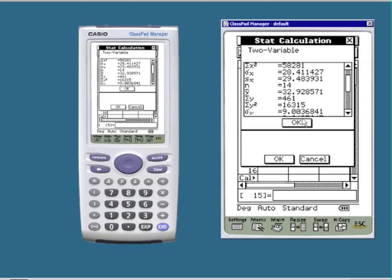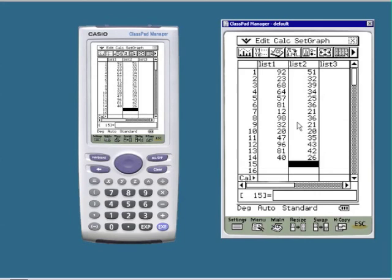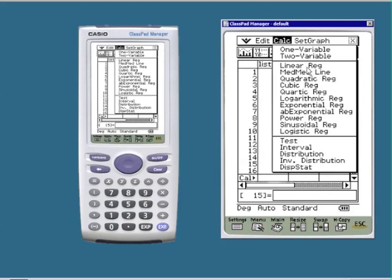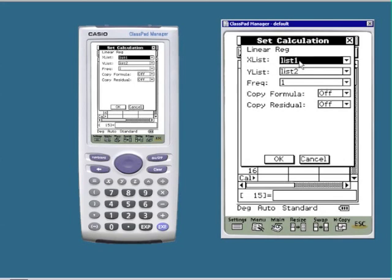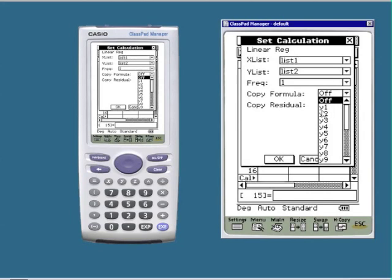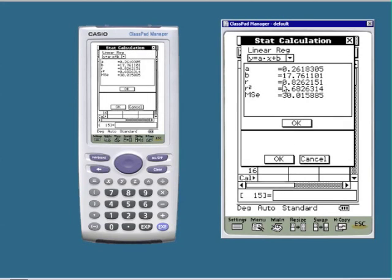To get the r value, we need to go to the next screen. So OK. And this time we're going to calculate the linear regression. X and y, list 1 and list 2, and I'm going to copy the formula to y1. I'll explain that later. Now we get our r value, 0.826 to 3 decimal places.